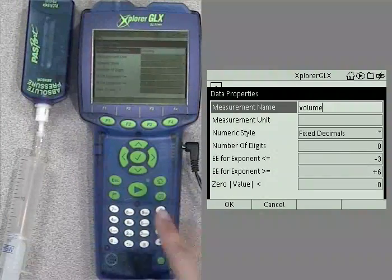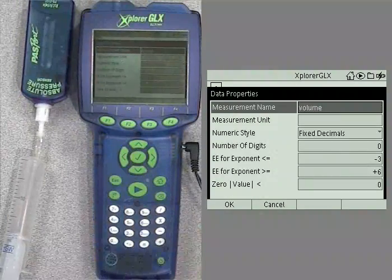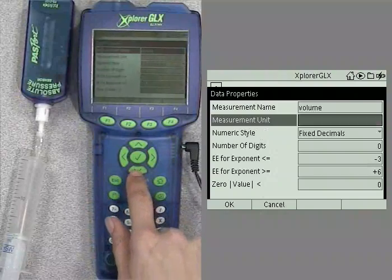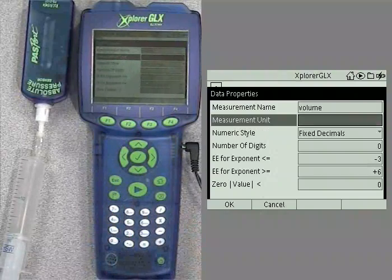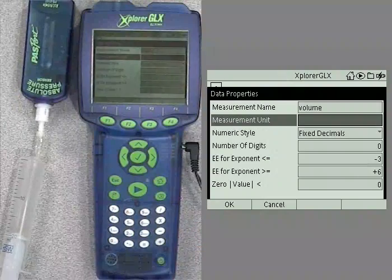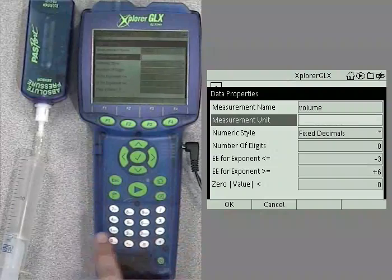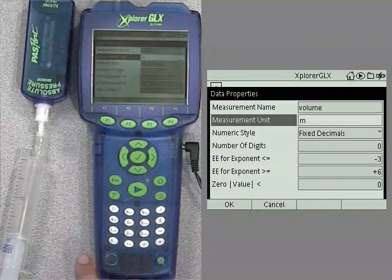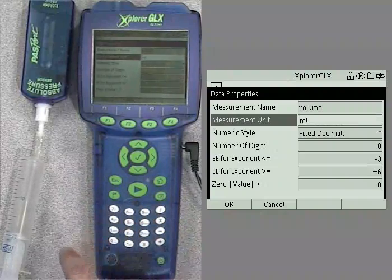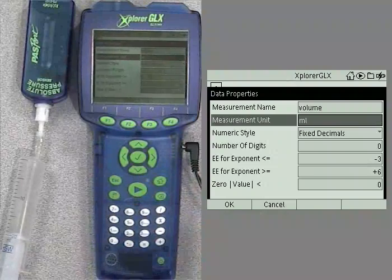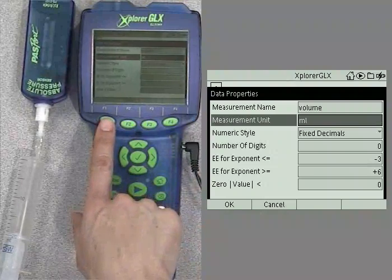When we're done, you push the check mark to accept your edits, and then we're going to use the arrow key to go down to the next field, which is measurement unit. And if you look at your syringe, the units are milliliters. So, push the check mark to edit that field, and let's type in milliliters, M, L, and check mark to accept those changes. To leave this screen, push OK or F1.